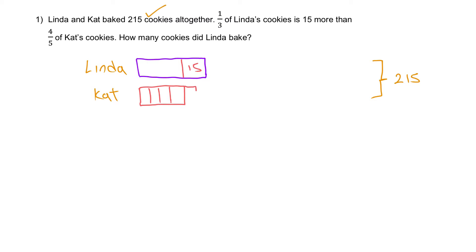Now I'll draw in the last fifth so this represents all of Kate's cookies. If I break Kate's portion into four units I must do the same for the comparison. So one, two, three, four — let me shade it for easier comparison. Now the model isn't done yet because this is one third of Linda's, so I need to extend it.